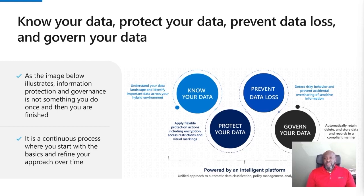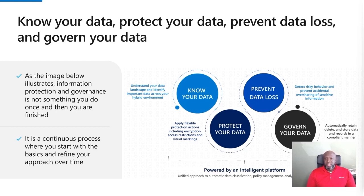Know your data — that means understanding the types of data your organization generates, and then distinguishing the critical data from the non-critical data. The second principle, protect your data, involves things like encryption, visual markings, and access restrictions. You encrypt your data to prevent unauthorized disclosure, whether your data is in transit, at rest, or in use.